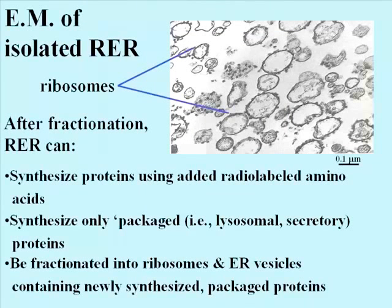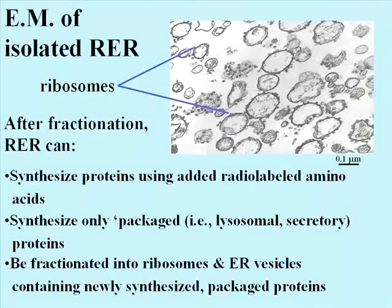This slide shows a TEM image of isolated vesicles from a cell fractionation. Because the vesicles are studded with particles that are about the same dimensions as ribosomes, it's reasonable to suspect them of being RER vesicles. If they are, then you should be able to predict some activities of such an isolate.